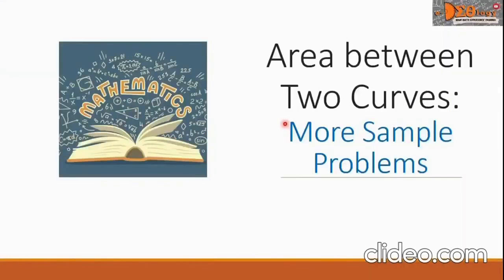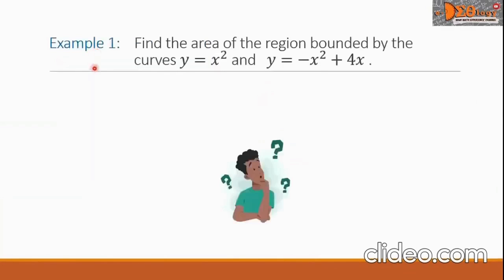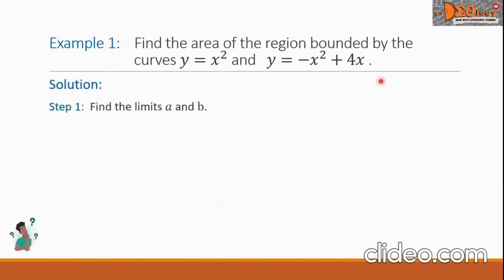Today we're going to study more sample problems on the topic: area between two curves. Example 1. Find the area of the region bounded by the curves y equals x squared, and y equals negative x squared plus 4x. Step 1 is to find the limits A and B.